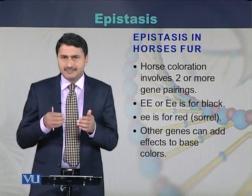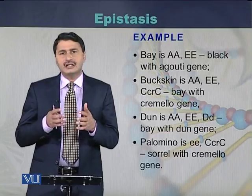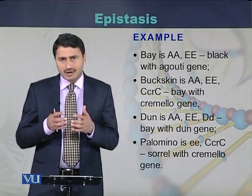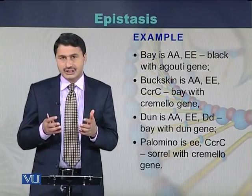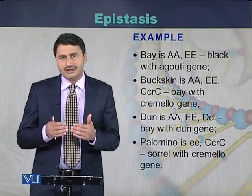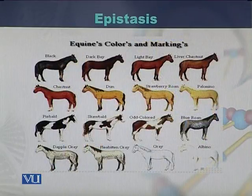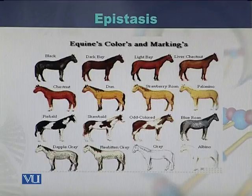Those genes have epigenetic effects on the first gene pair. Here we can see all the genotypes responsible for coloration in horses: bay (AA and EE), black with a gray gene, buckskin, dun, palomino — these are all different colorations in horses. We can see black, dark bay, light bay, different dun types, and some completely albino-type horses. All this coloration in the fur of horses is due to the epistasis phenomenon.